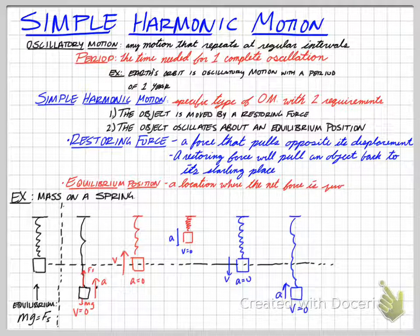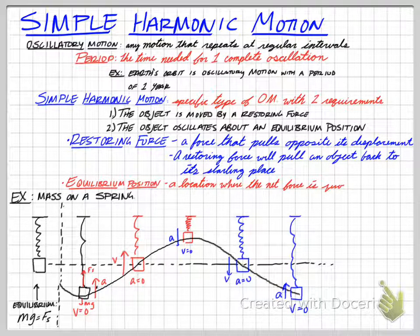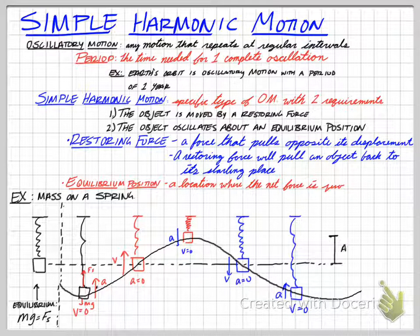That's our simple harmonic motion. If we wanted to, we could kind of connect those dots. That's what a position versus time is going to look like for the motion of this object on a spring. It's part of a sinusoidal curve, or a sine graph, or a cosine graph. It's that nice, smooth, repeating sine wave, is what we call it.